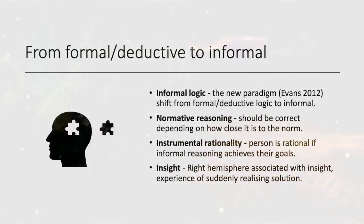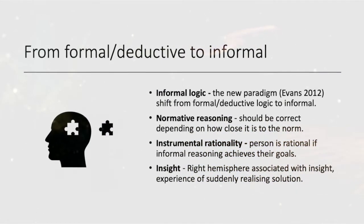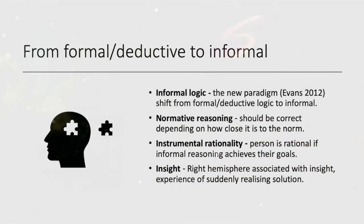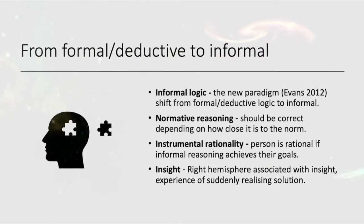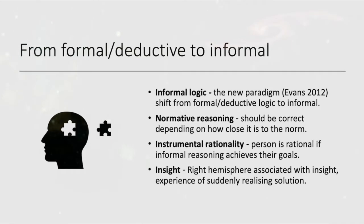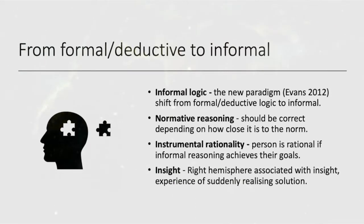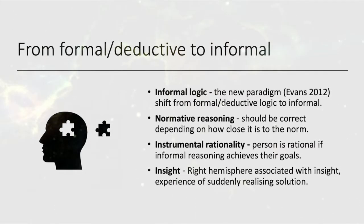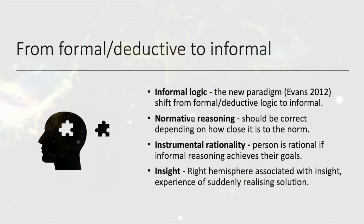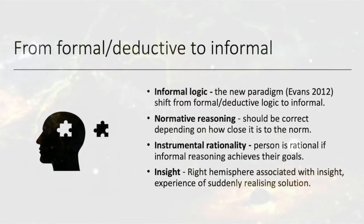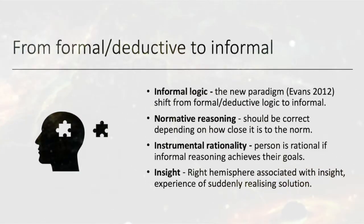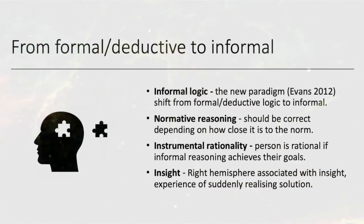Instrumental rationality is where a person is rational if their informal reasoning achieves their goals. Whether this rationality is right or wrong is dependent upon whether this reasoning achieves their goals, even if in reality it probably is not right or wrong.